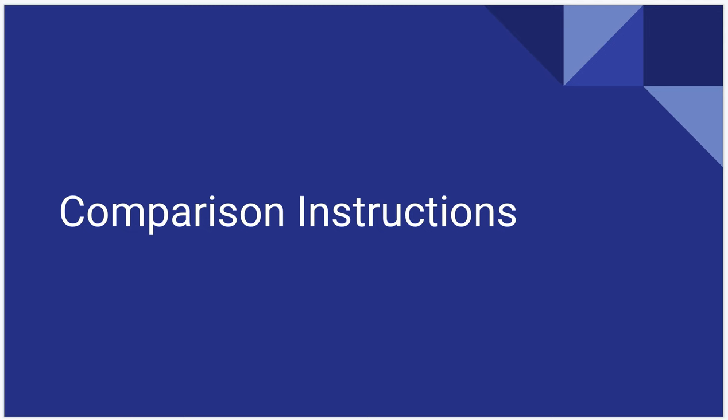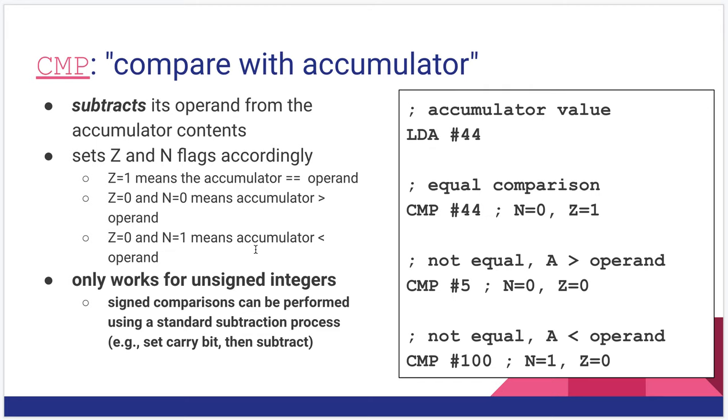So start by looking at comparison instructions. And really, there's just one that we're interested in, actually three, but they all work the same. CMP, compare with accumulator. Before we go into the details, think about compare as it has an operand, and it sees if that operand is greater than the accumulator, less than the accumulator, or equal to it. And it's going to do something different depending on each one of those situations. The best way to think about it is to look into the details of it. So whatever operand it has, it will subtract it from the accumulator, and then it will set the zero and negative flags based on what it sees, based on the results of that subtraction.